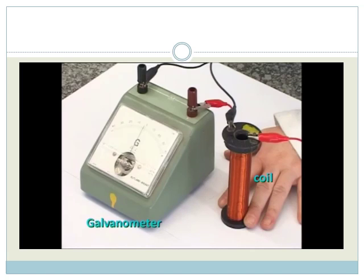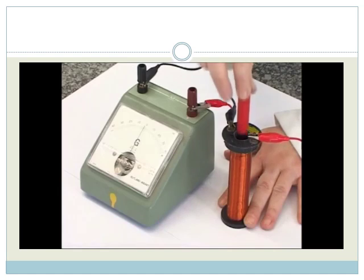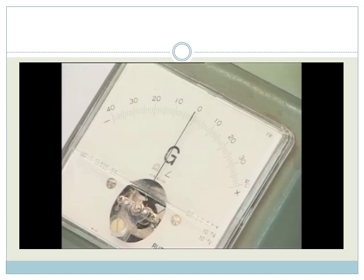So let's slide the north pole into the coil and see what happens. The needle of the galvanometer moves. We've made electricity.